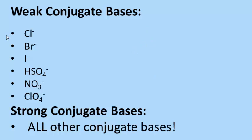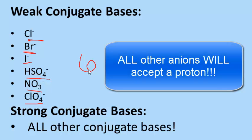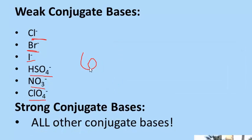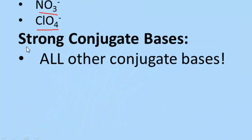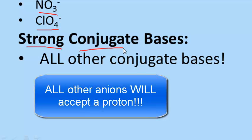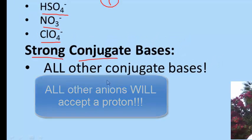The conjugate bases that are weak are the anions of all the strong acids. These include chloride ion, bromide ion, iodide ion, hydrogen sulfate, nitrate, and perchlorate. Remember there are six strong acids, and if you take the proton away from each, what is left is a weak conjugate base — meaning every single one of these will not react with water. All other conjugate bases are considered strong and would react with water.